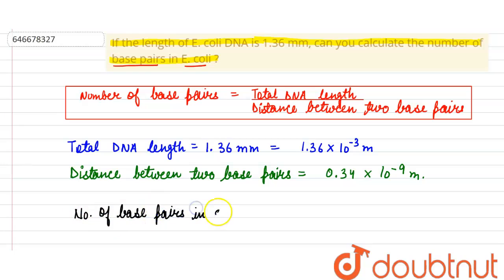in E. coli will be 1.36 into 10 raised to the power minus 3 divided by 0.34 into 10 raised to the power minus 9, which will be equal to